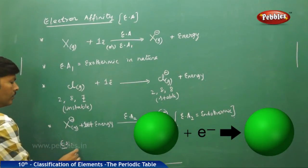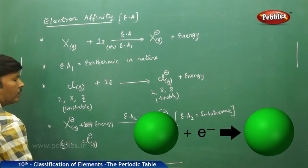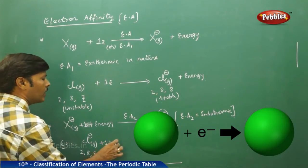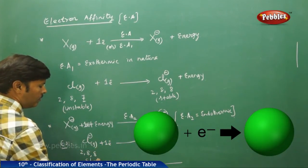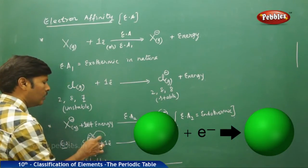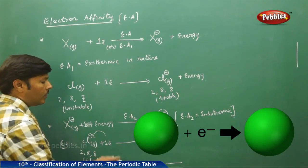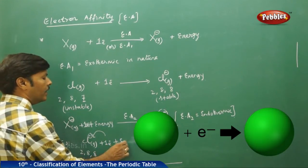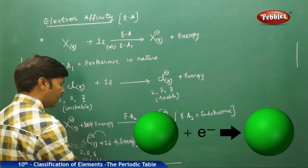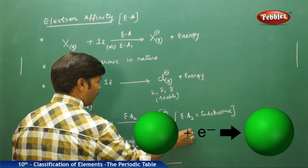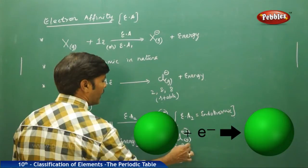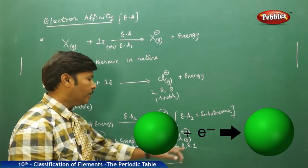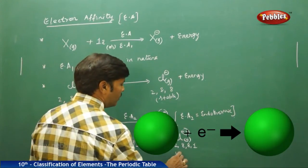Take one example: the uninegative Cl⁻ gaseous ion has configuration 2, 8, 8 — it is already stable. But you are forcibly injecting one more electron into this stable species, so instead of releasing energy, it will absorb energy and form a dinegative gaseous ion with configuration 2, 8, 8, 1 — meaning 19 electrons total — converting the species from stable to unstable state.